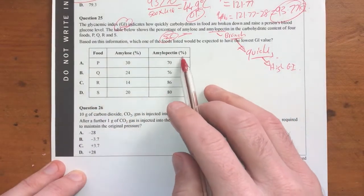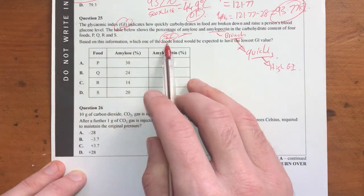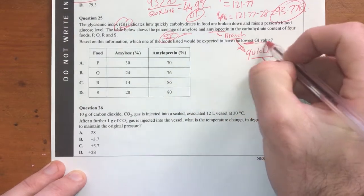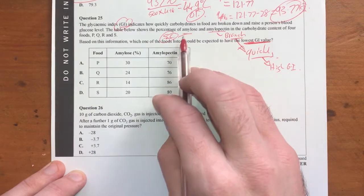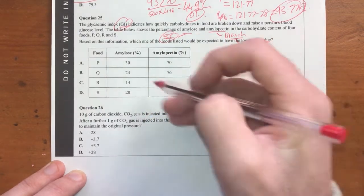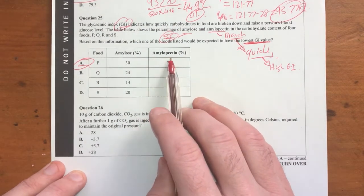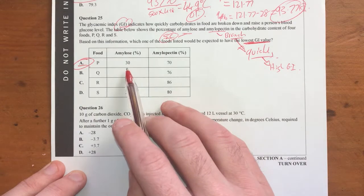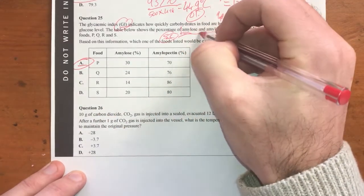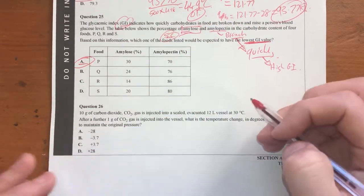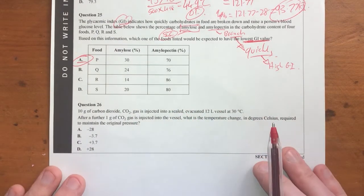So therefore, let's look at our amylopectin. The lowest, hang on, what is the question actually? Based on this information, which of the foods listed would expect to have the lowest GI. So the lowest GI would expect to have the most amylose and the lowest amount of amylopectin. So A is going to be our answer there because it's only got 70% amylopectin compared to all the other ones here and the amylose is much higher. So therefore, remembering that amylose being a straight chain carbohydrate, those things can pack close together and therefore, the water can't attack it as well and break it down.